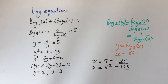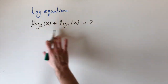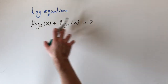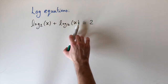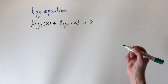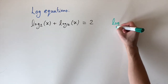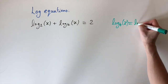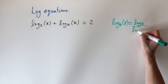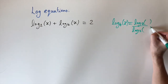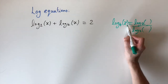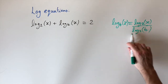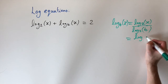For the second example, we have a logarithmic equation where the bases are both numbers. The strategy is the same — get everything in terms of the same base. We convert log base 4 into base 2 using the change of base formula: log base 4 of x equals log base 2 of x divided by log base 2 of 4.